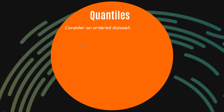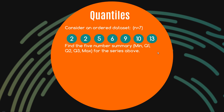Let's look at how to calculate quantiles for a small data set. Here we have seven observations: 2, 2, 5, 6, 9, 10, 13. The question is to find the five-number summary — that is, the minimum, quartile one, quartile two (the median), quartile three, and the maximum. The minimum is 2, the maximum is 13, and the median is 6, which is the middle number of the data set.